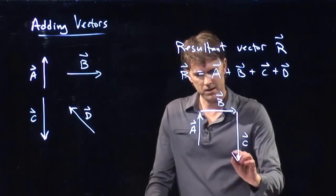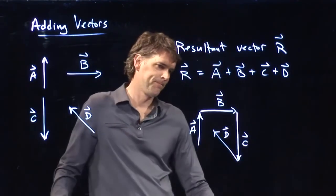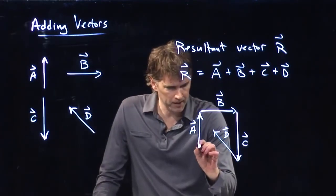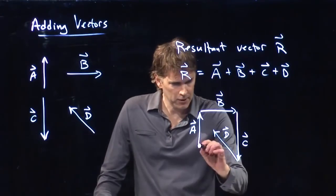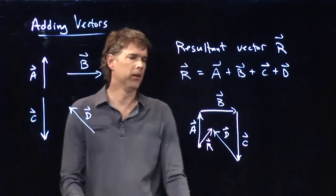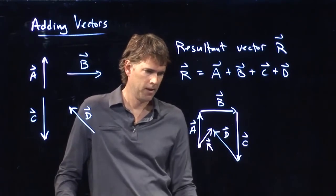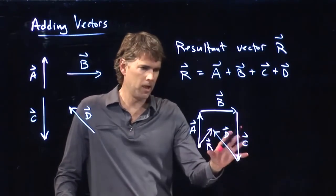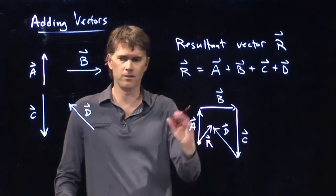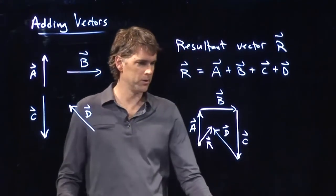Starts at the end of C and goes up in that direction. So what does R look like? R, you start at the very beginning of the problem and you go to the very end of the last arrowhead. So R is that little arrow right in there. And that graphically will now allow you to approximate what the length of that vector is going to be and what angle it's going to be. And so you can double check with your calculations when you're all done.